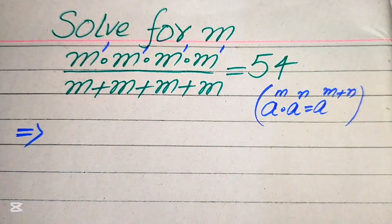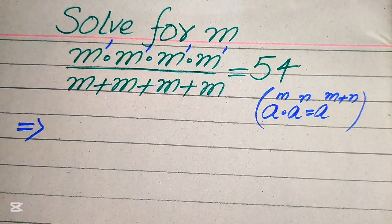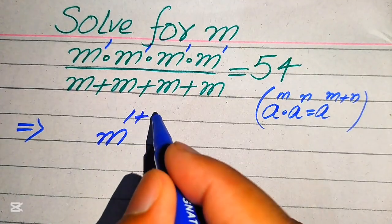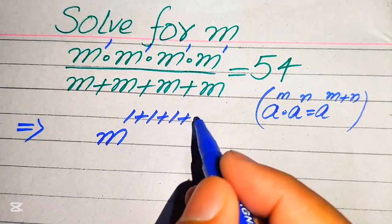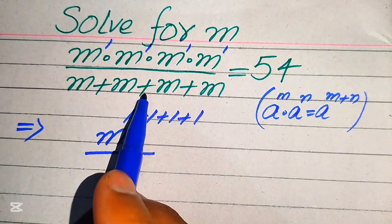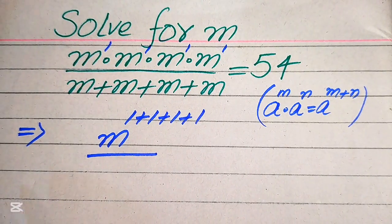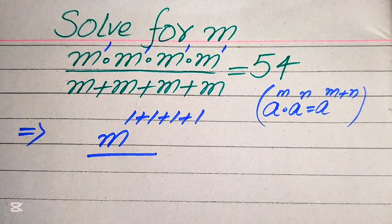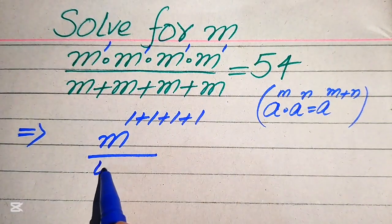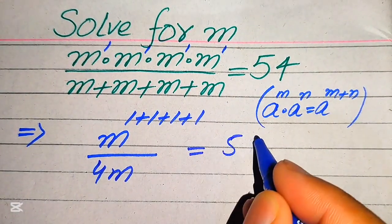According to this exponent law, we need to add the exponents of all these terms. So it will be written as m to the power of 1 plus 1 plus 1 plus 1, and it is divided by m added 4 times, which is written as 4 times m, and this equals 54.